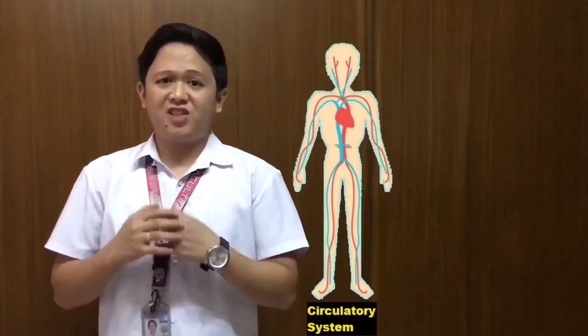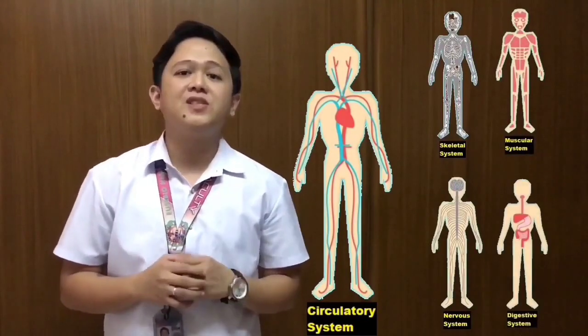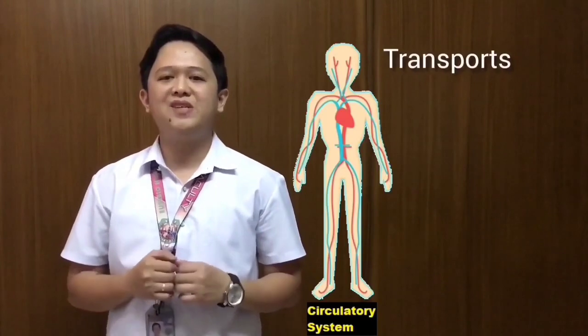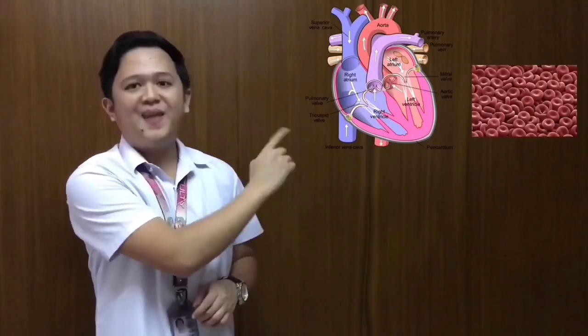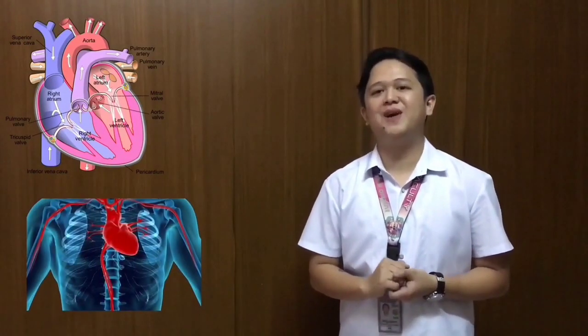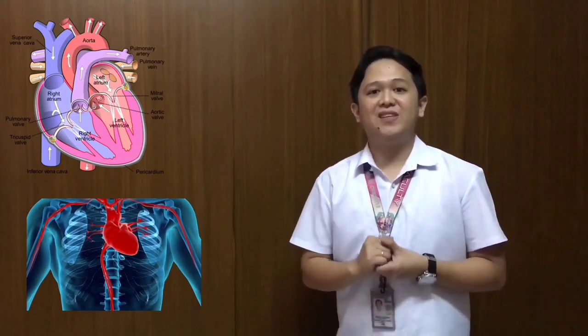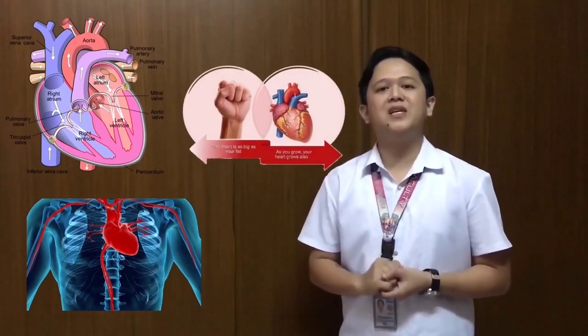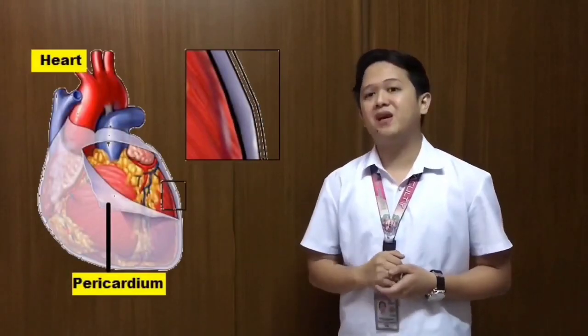The circulatory system functions with other body systems to deliver different materials in the body. It circulates vital elements such as oxygen and nutrients, and also transports waste away from the body. In humans, the circulatory system consists of the heart, blood, and the blood vessels that carry blood to every part of the body, and the lymphatic system. The heart is the muscular organ that pumps blood to the different parts of the body. It is located at the middle of the chest cavity with its tip or apex exactly tilted toward the left. Its base lies just below the second rib. The heart is just as big as one's own clenched fist. A sac known as the pericardium encloses it.